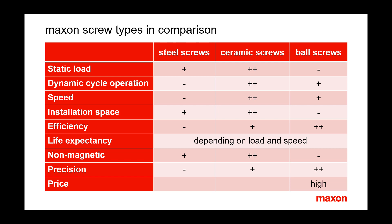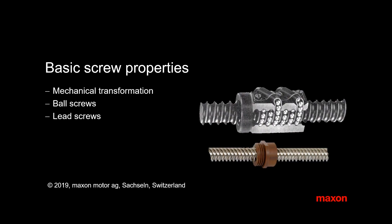Precision has different aspects: one is repeatability, another is absolute accuracy. Ball screw precision depends on manufacturing — rolled or ground — with ground spindles being generally more precise. Ball nuts are usually preloaded, but preloaded nuts are also possible on metric spindles.